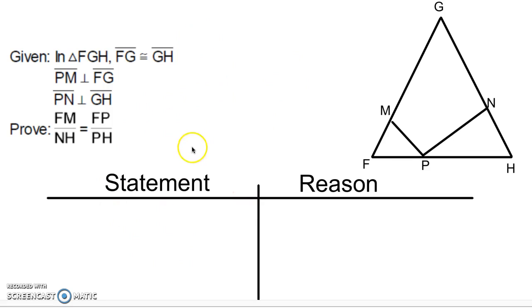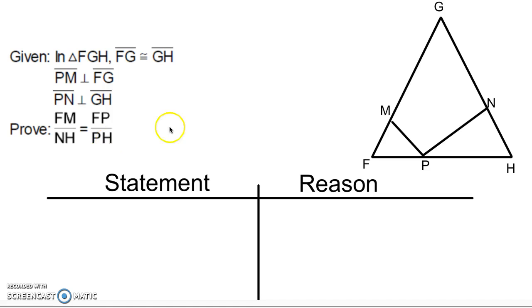What will tip you off that it's a similar triangle proof is if you see a statement like this — prove a proportion. Think about proportions. Where do proportions come from? Similar figures, right? We can write a ratio of corresponding sides. So if you see something like this, proving a proportion, or another statement I'll show you later, that's going to be a clue that you want to look for similar triangles.